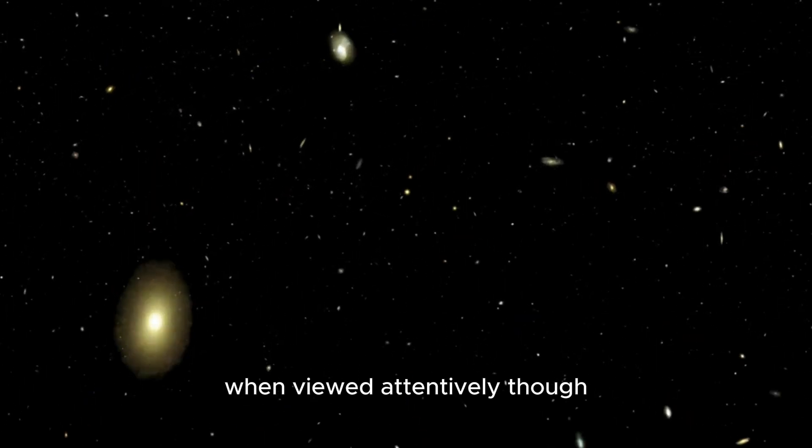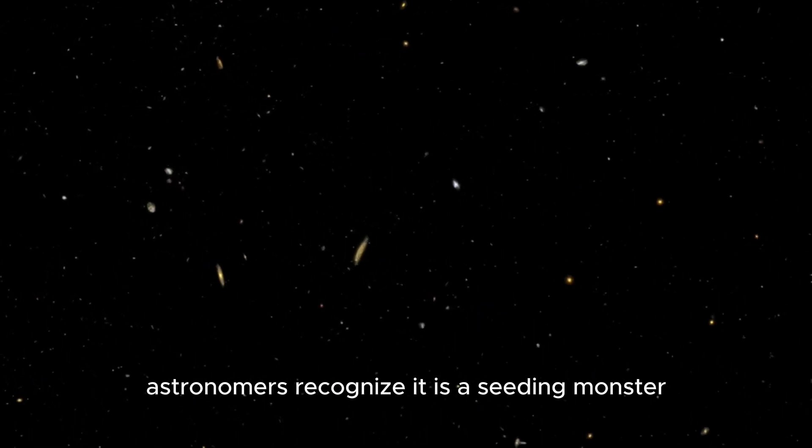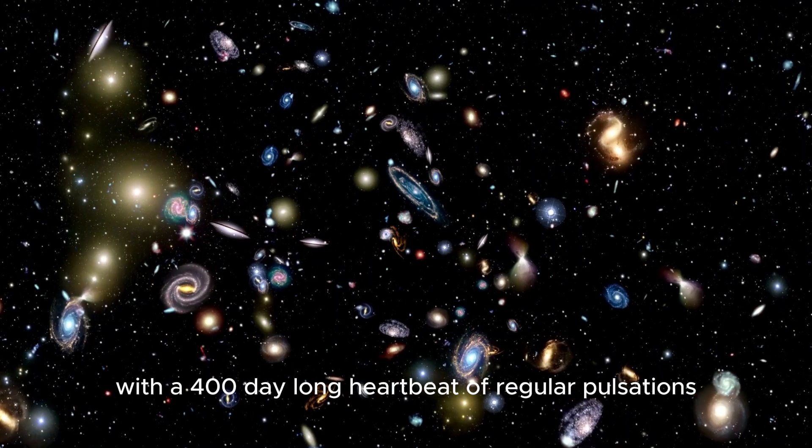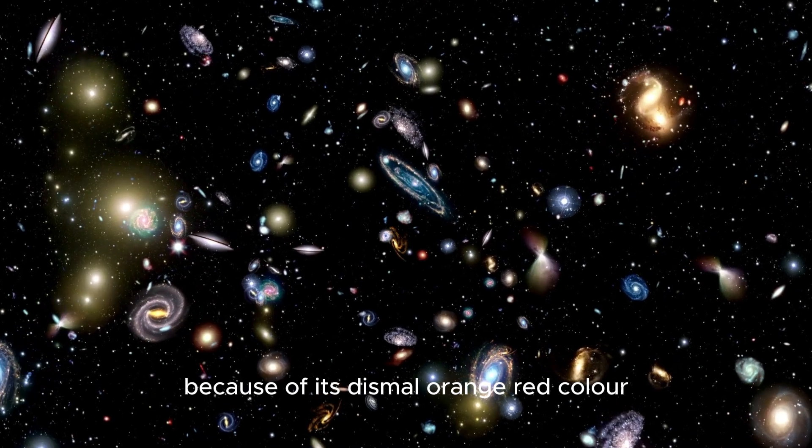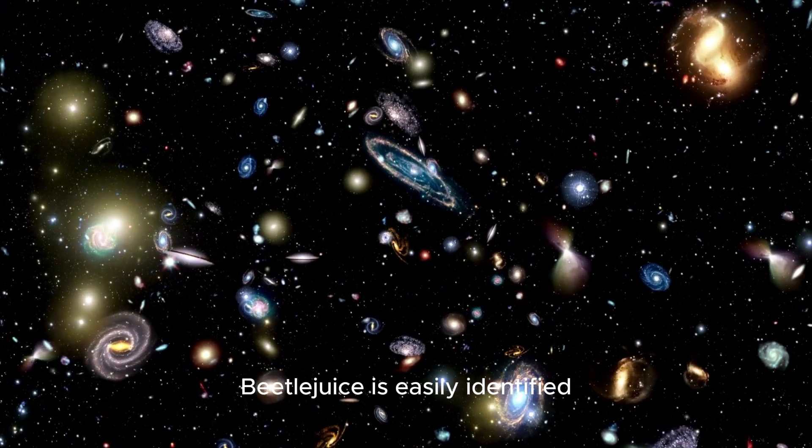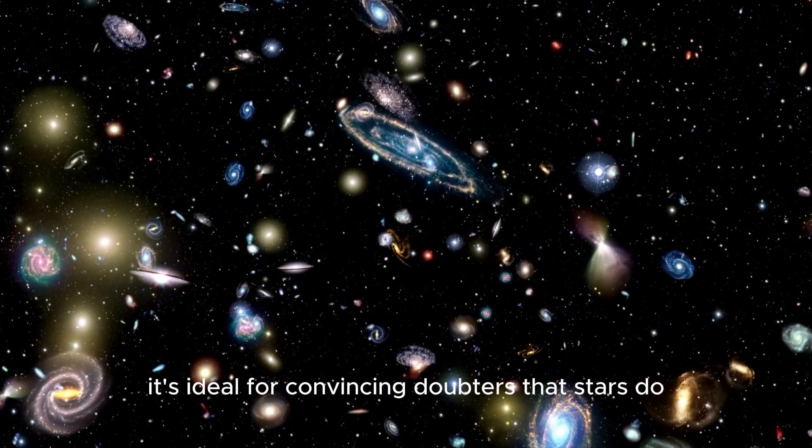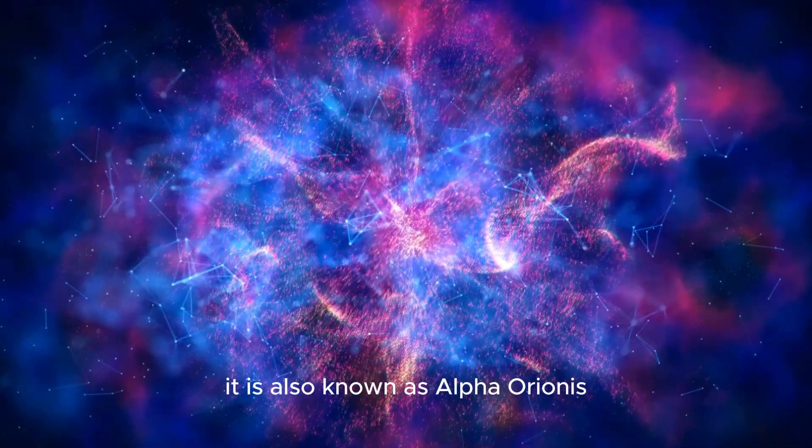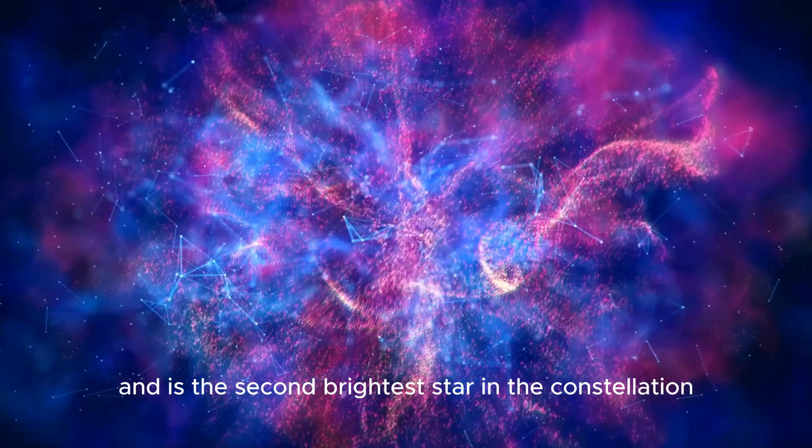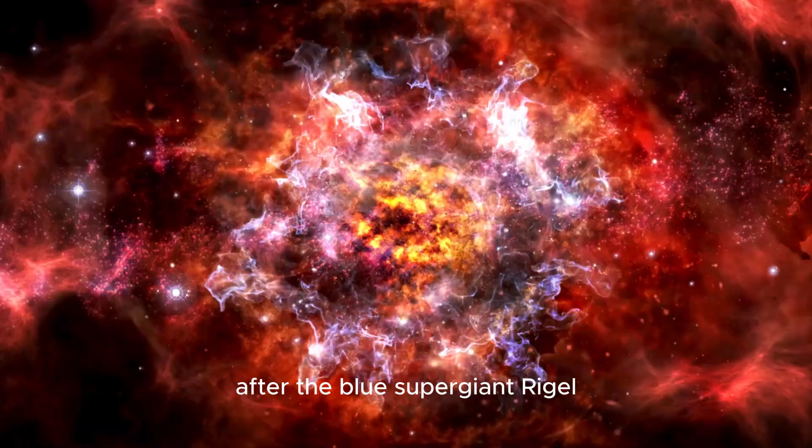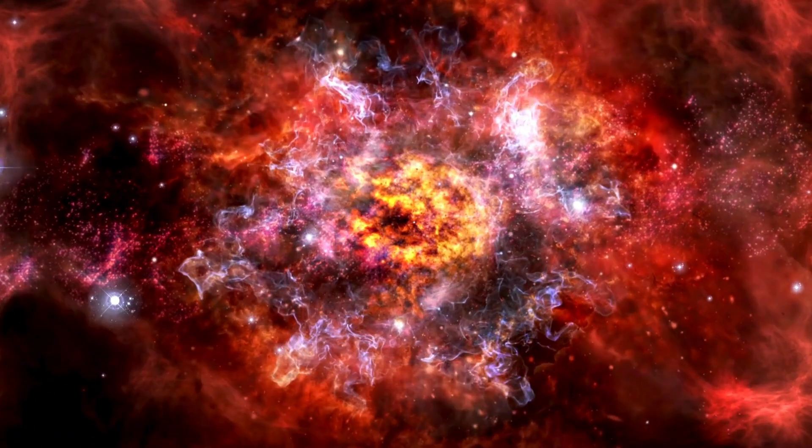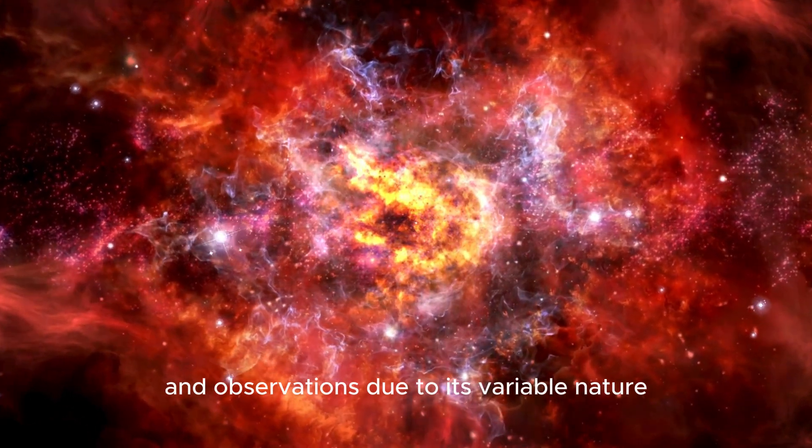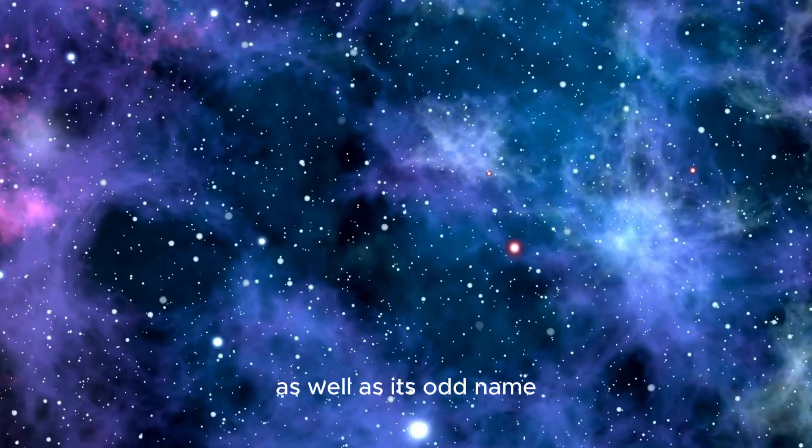One such star is Betelgeuse, which is among the largest and brightest stars in our night sky. The brilliant ruby-red glittering star is located in the upper right shoulder of the winter constellation Orion the Hunter. When viewed attentively, astronomers recognize it as a seething monster with a 400-day-long heartbeat of regular pulsations.